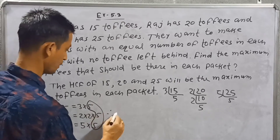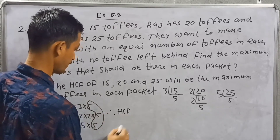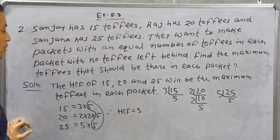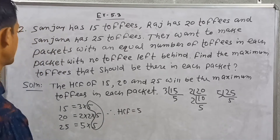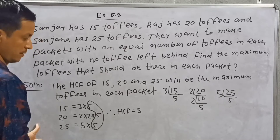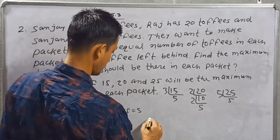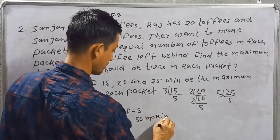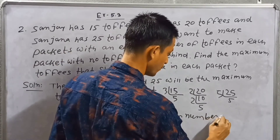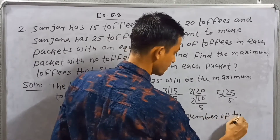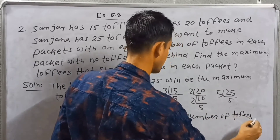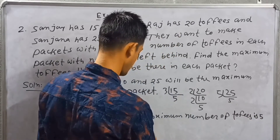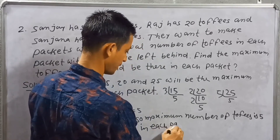Therefore the HCF is equal to 5. So the maximum number of toffees in each packet is 5.